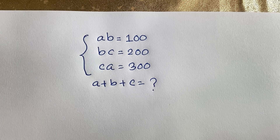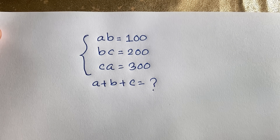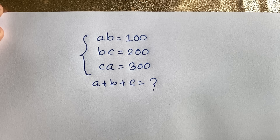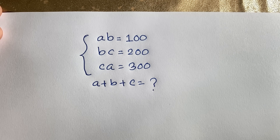Hello everyone. In this video, we have solved this interesting math olympiad question. AB is equal to 100, BC is equal to 200, CA is equal to 300, and A plus B plus C is equal to what?